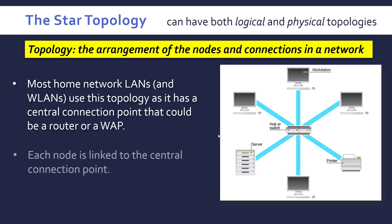The point of this is that each node is linked to this central connection point, so they only ever go through it. This means the centralised point receives all the data and can forward it on to only the intended recipient.